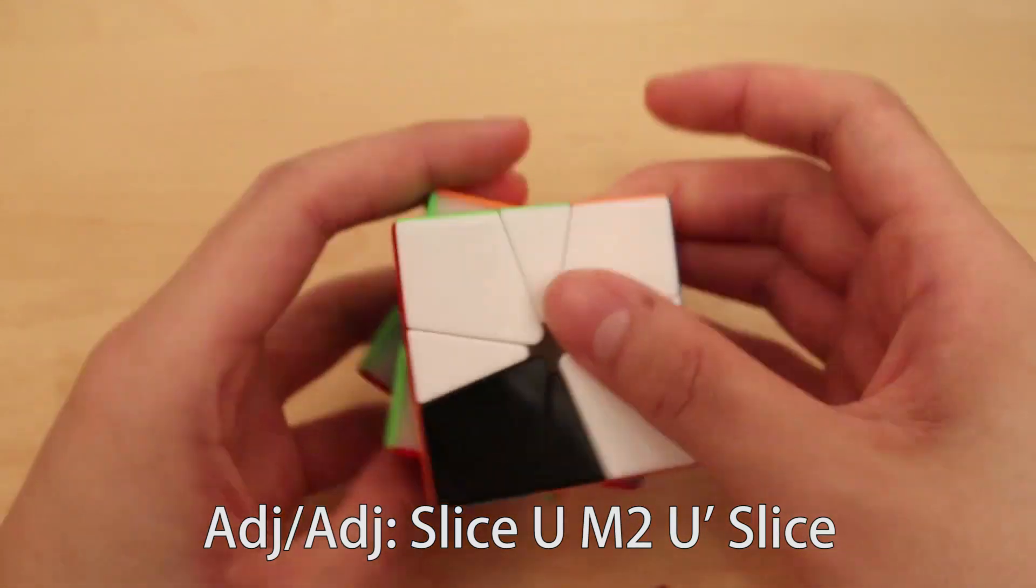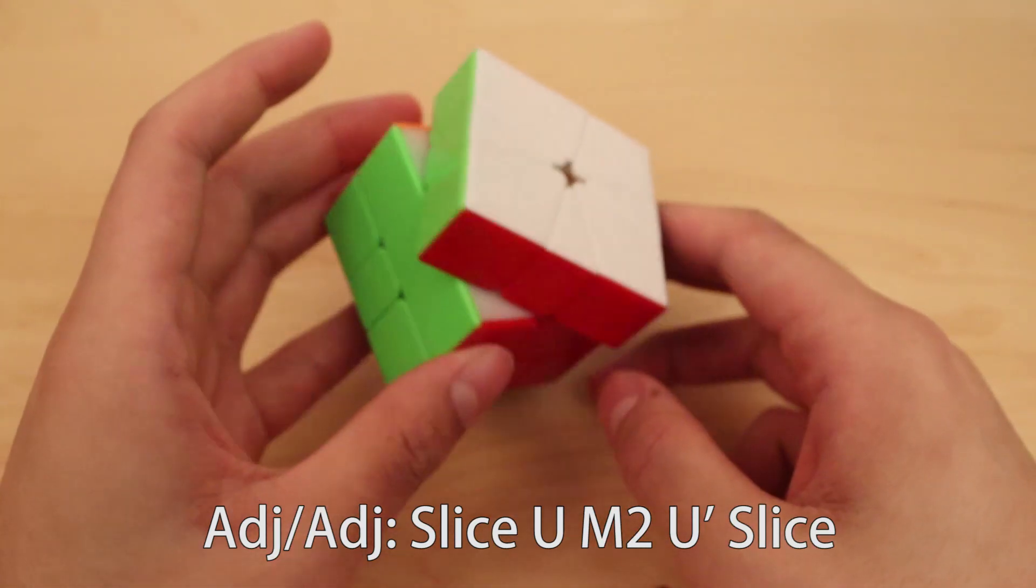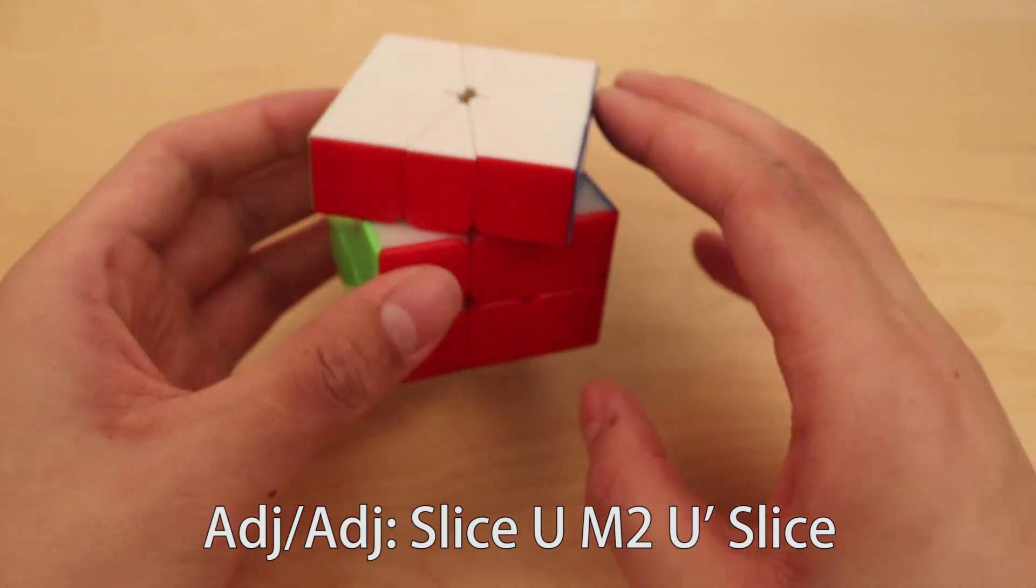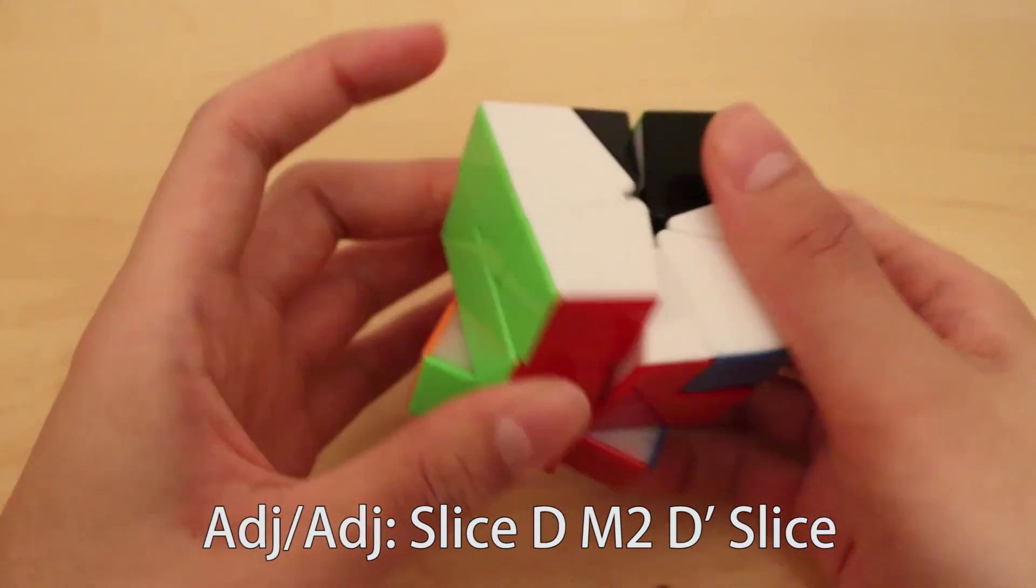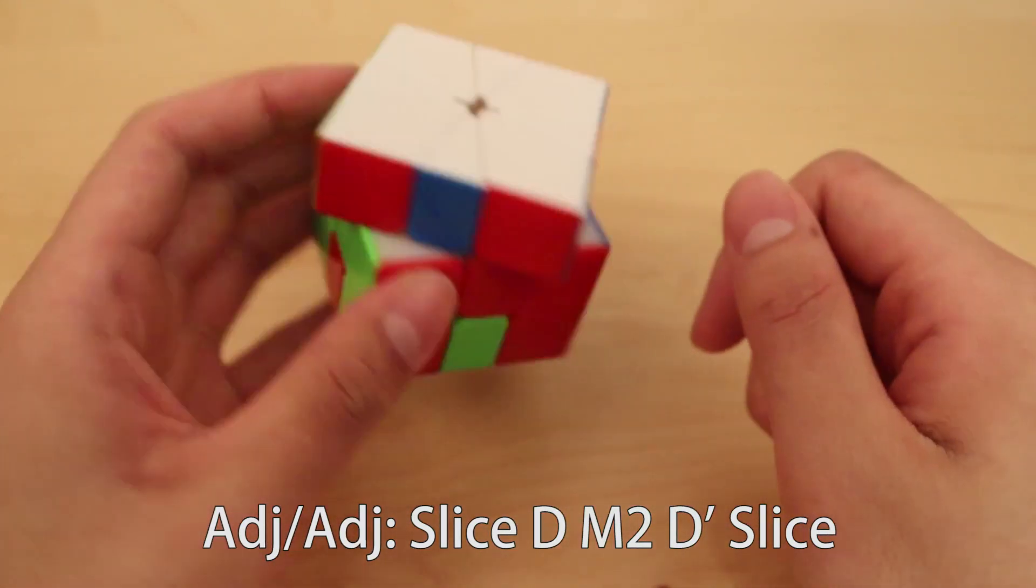So this is pretty important to know from different angles. Here's the back one. The way I would think about this intuitively is slice U, M2, U prime, slice. That's edge-edge. Stuff like this in the front also works. Slice D, M2, D prime, slice. That's edge-edge again.